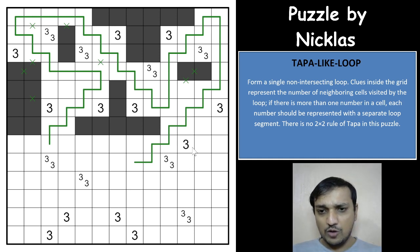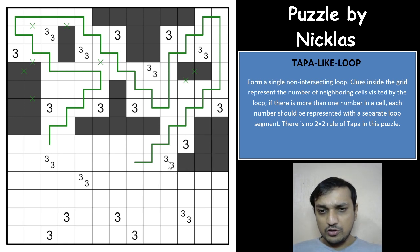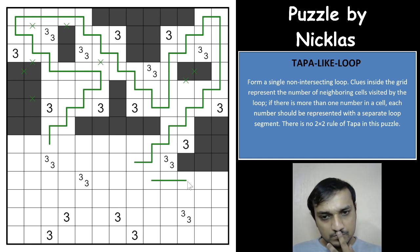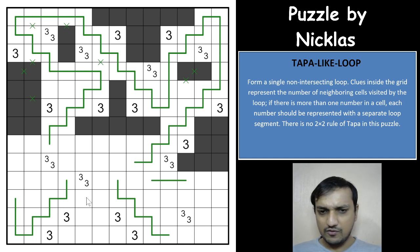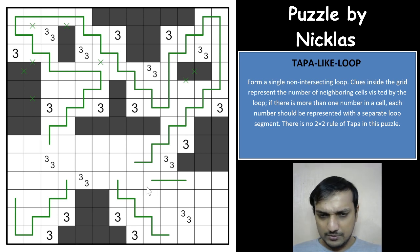Hats off to Niklas for getting motivated to create such puzzles after watching videos. This cell will not be used, and none of these cells will be used, so I can mark those. For this 3, 3 clue, one 3 is fulfilled; the other 3 would have to be fulfilled this way. For this 3 clue, these 3 cells will have to be used — easy. And same way for the neighboring clue, these cells will be used and the loop goes this way. None of these cells will be used.